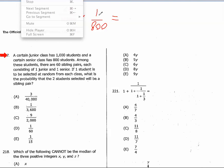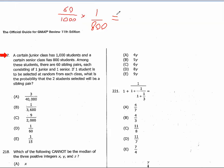So that gives us 60 out of 800,000. Not very good odds. Now, 60 out of 800,000 is not one of the answer choices, but we can see that it's the same as 3 out of 40,000.